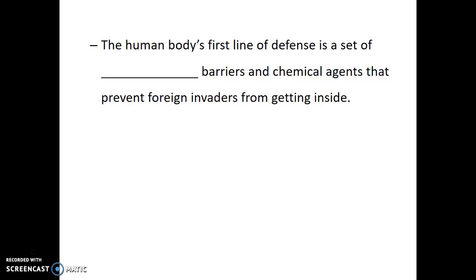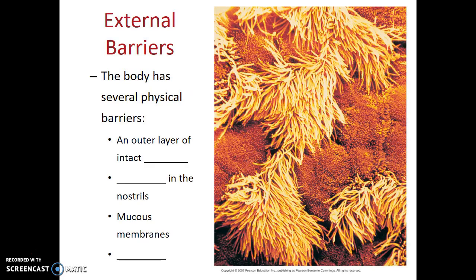The human body's first line of defense is a set of external barriers and chemical agents. The job of these barriers is to prevent foreign invaders from getting inside. There are several physical barriers, including an outer layer of intact skin, hair within our nostrils, mucous membranes which line the respiratory system and the orifices of our body, and also cilia. Here we see an electron micrograph of cells lining our trachea. The orange spongy-looking cells are the mucous membranes, which secrete sticky adhesive mucus to catch pathogens and dust particles. The cilia then help sweep those out of the respiratory system.